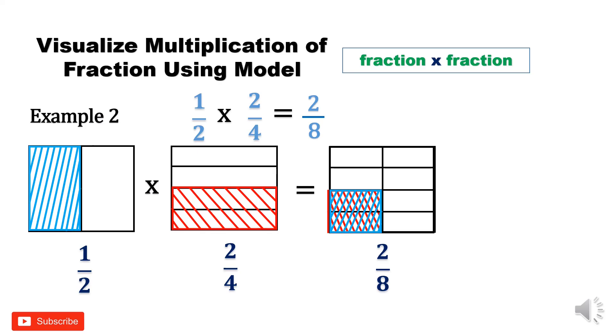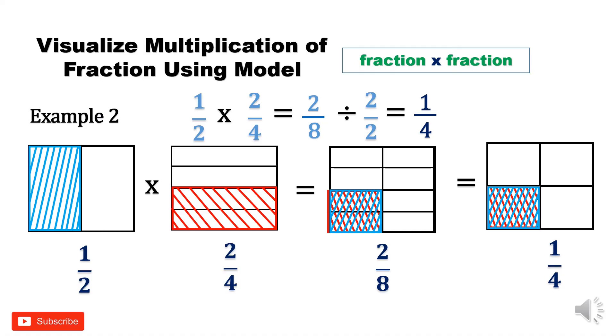What is the lowest term of 2/8? Let us divide it by the GCF which is 2. 2 divided by 2 equals 1, 8 divided by 2 equals 4. Can you see 1/4 in our model? Correct. That is what 1/4 looks like.